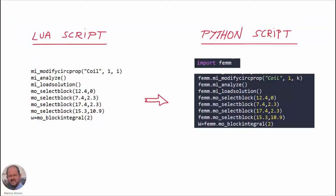Let's compare a Lua script and a Python script. We can see the Lua script we have used before, and on the right the equivalent commands in Python. They are very similar — the only point to note is that we have to add the word 'FEM' before the Lua command. Otherwise the Lua commands and Python commands are very similar, with minor differences.